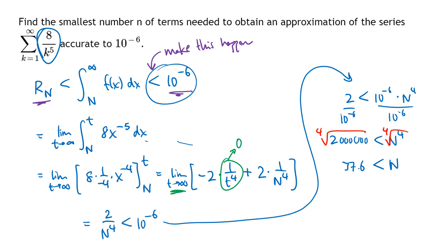Now N is a number of terms, which means N has to be a whole number. And so the smallest whole number that's greater than 37.6 is 38. So N should have to be at least 38. And since they want the smallest number of terms, 38 is the answer that we're looking for.